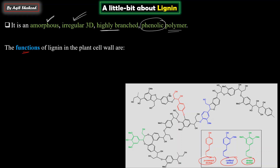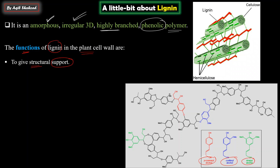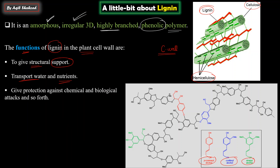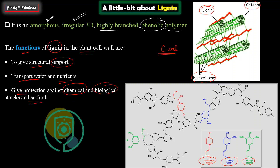The functions lignin performs in plants: it also gives structural support, like cellulose, pectin, and hemicellulose. It is present in plant cell walls - lignin, cellulose, and hemicellulose are all there, forming a composite that gives great support to the cell wall for its stability. Lignin also transports water and nutrients through it. Because of its tough and resilient nature, it gives protection against chemical and biological damage.